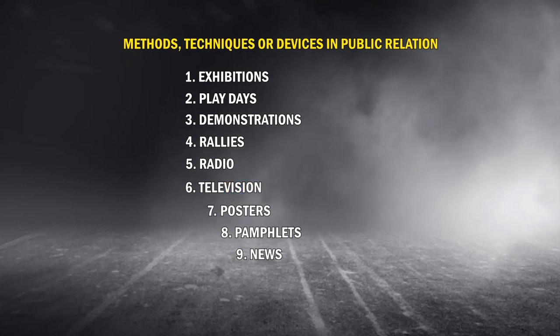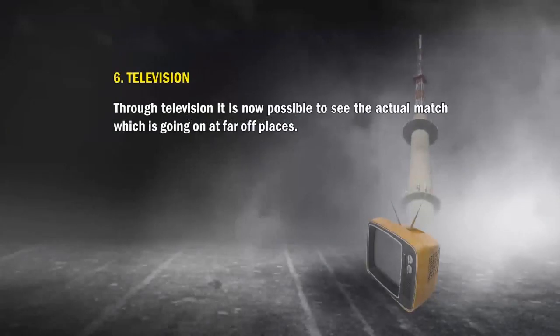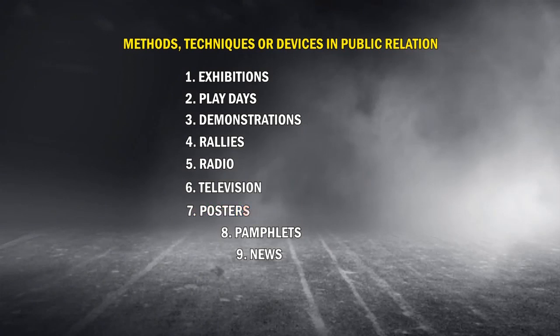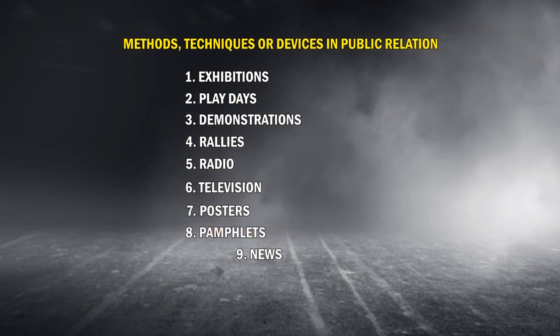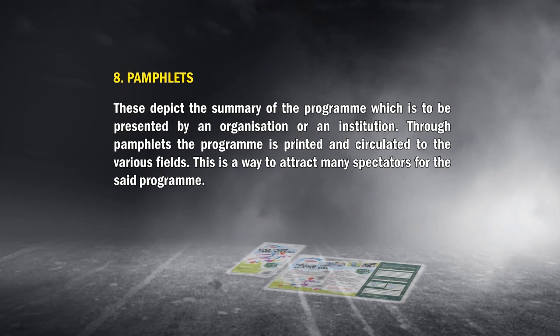Number 6: Television. Through television, it is now possible to see the actual match which is going on at far-off places. Number 7: Posters. Through posters, the program can be publicized. It is the way through which the public is attracted towards certain programs. Number 8: Pamphlets. These depict the summary of the program which is to be presented by an organization or institution. Through pamphlets, the program is printed and circulated to various fields, attracting many spectators.